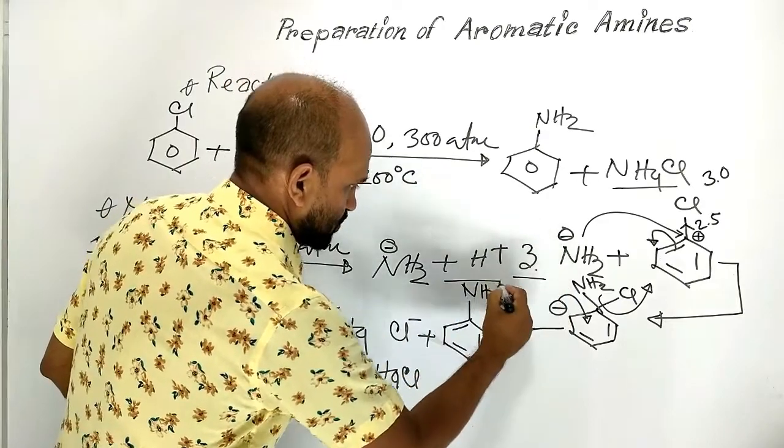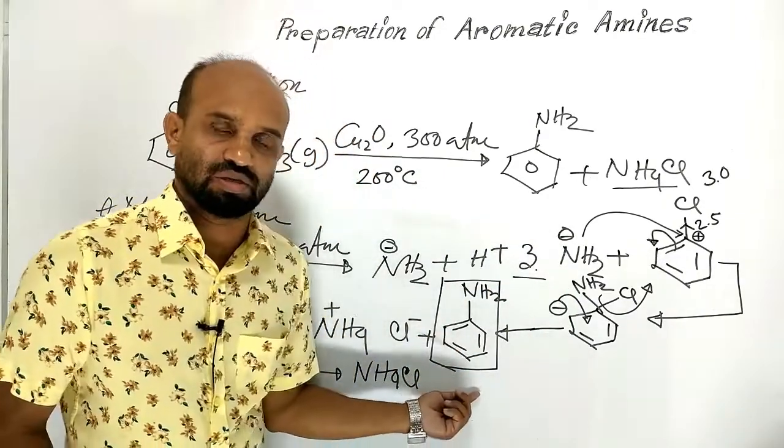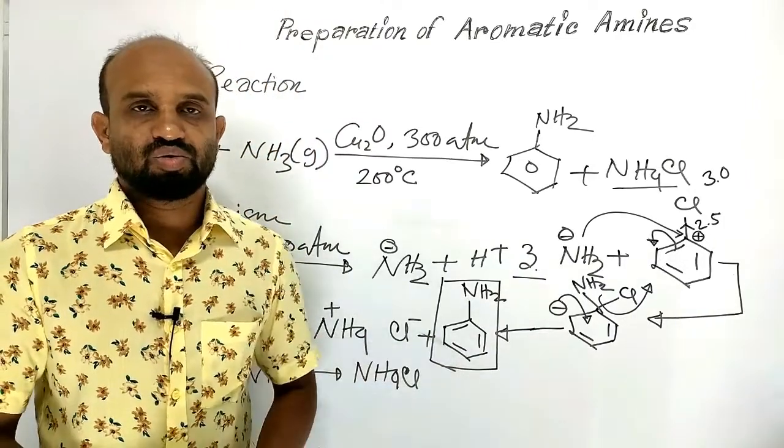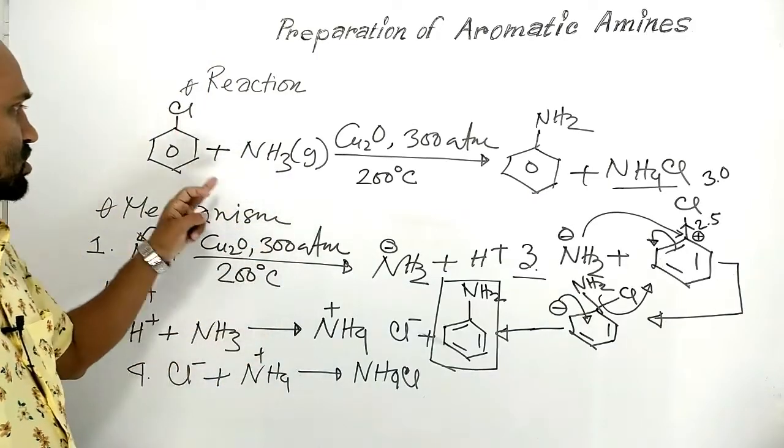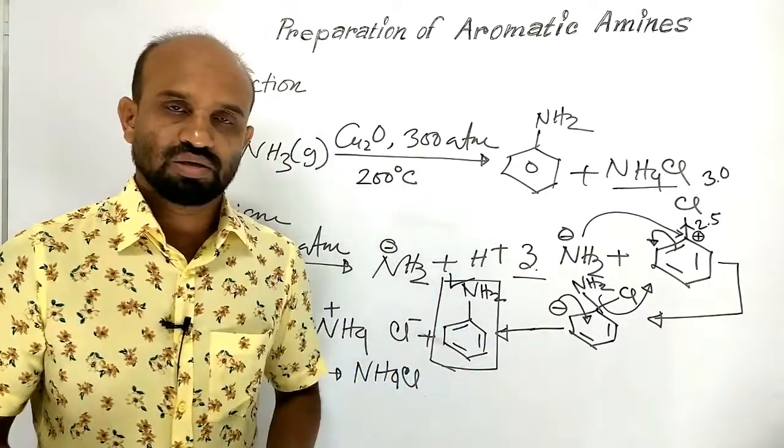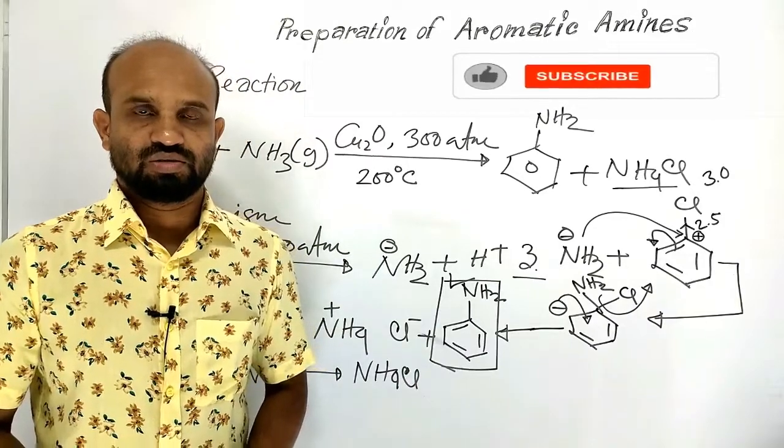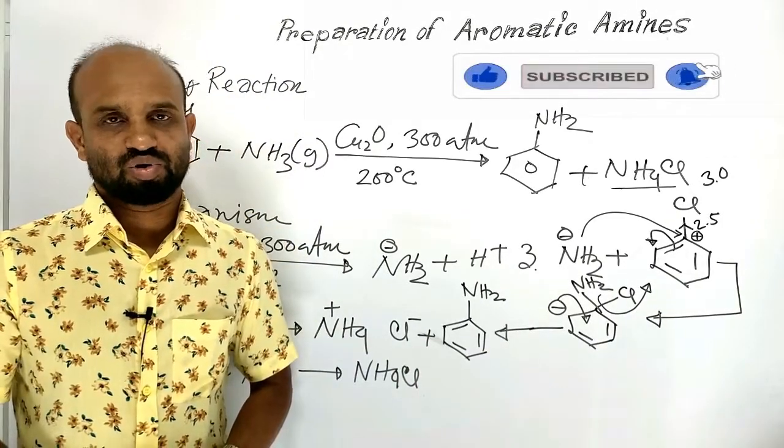Aniline is produced at step 3. This is the way by which aniline is produced from chlorobenzene. This is aniline, or amino benzene. This is all about preparation of aniline from chlorobenzene.